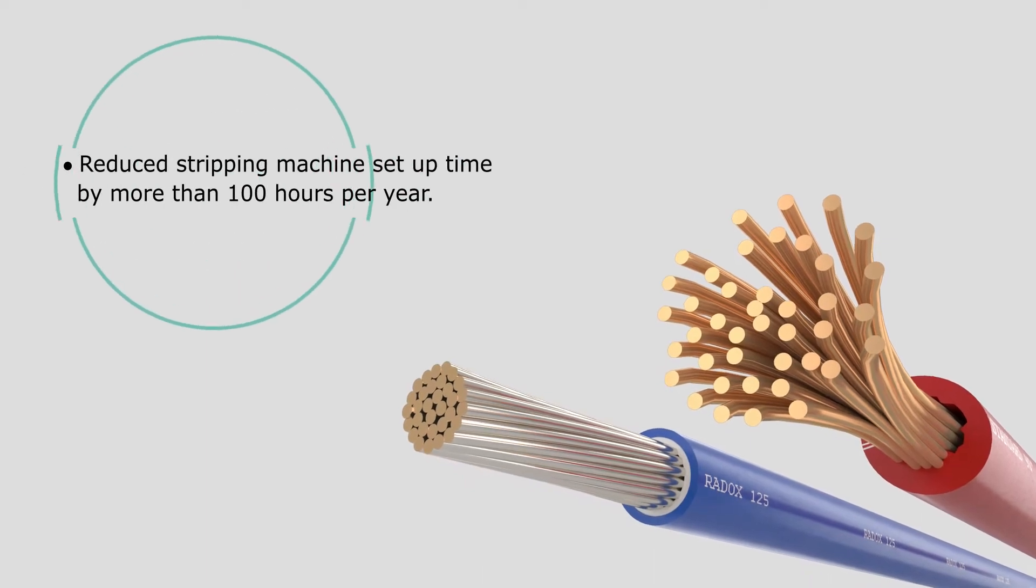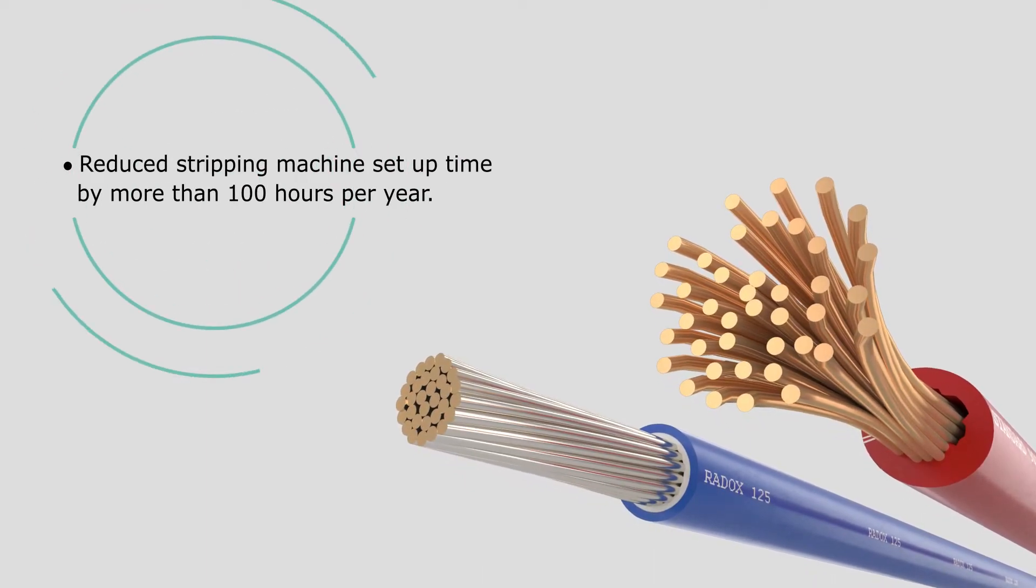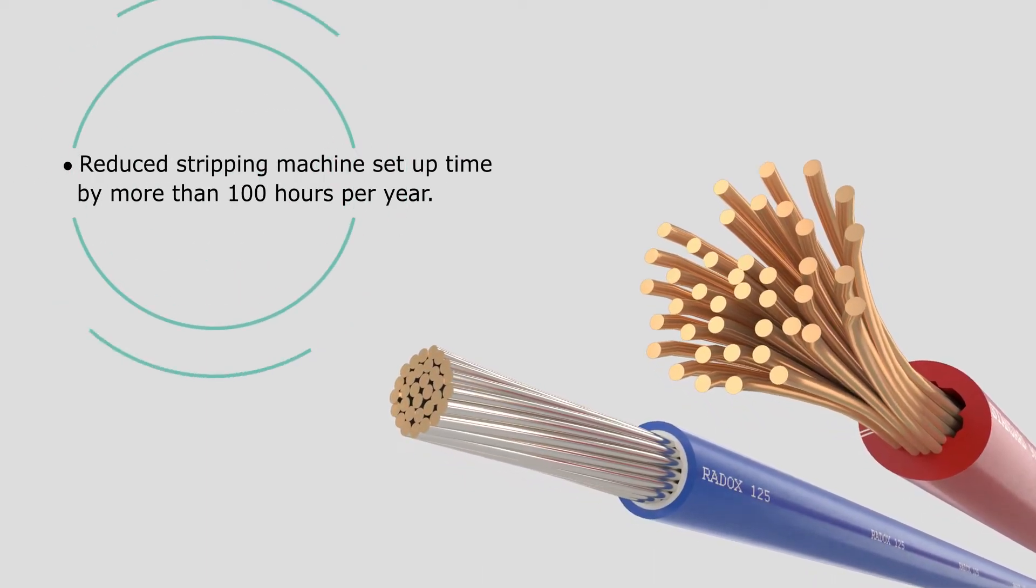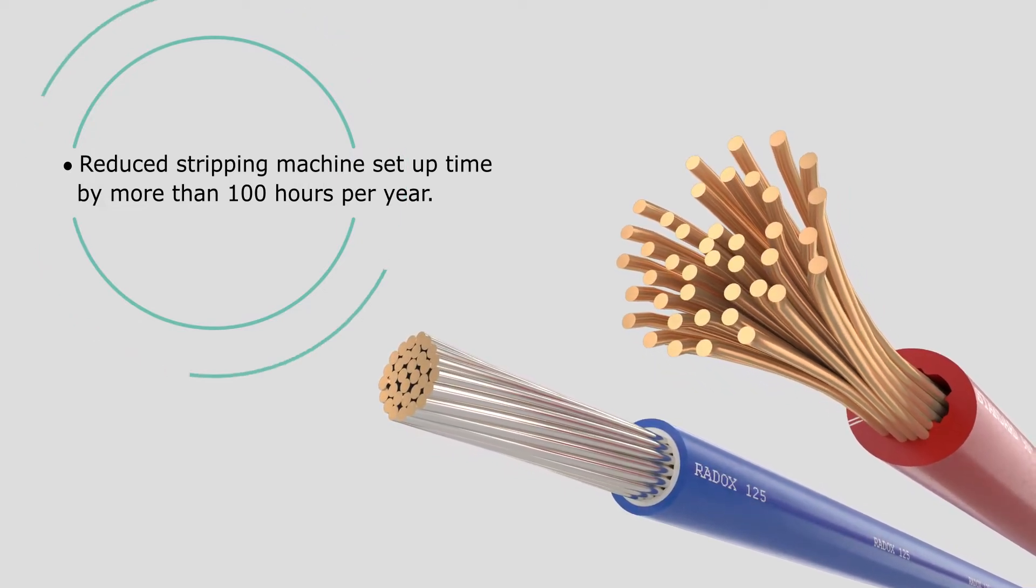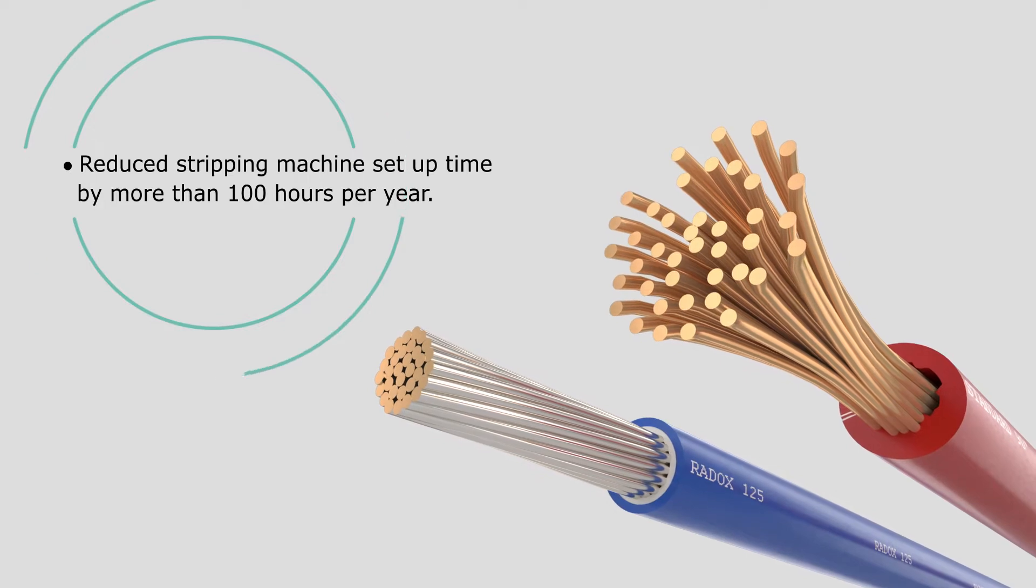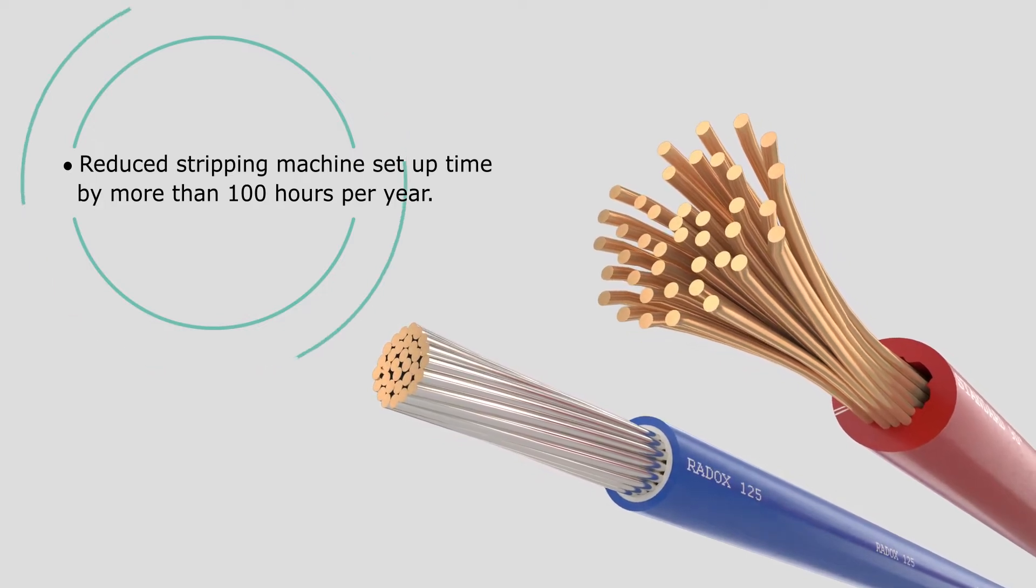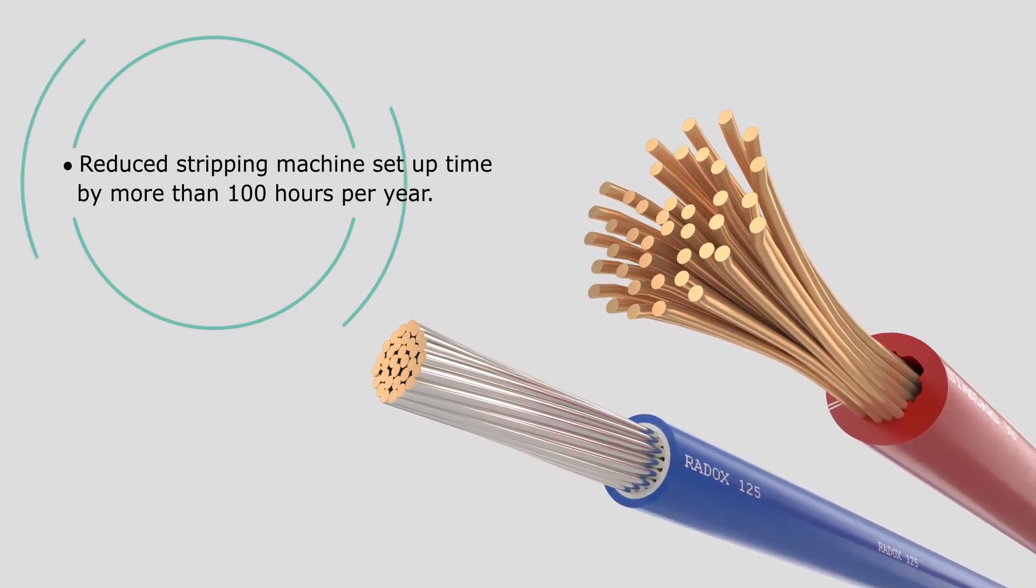Stripping of the Redox 125 can increase the efficiency of the stripping process by up to 2.5%. In other words, operators can reduce the setup time for each machine by more than 100 hours per year.